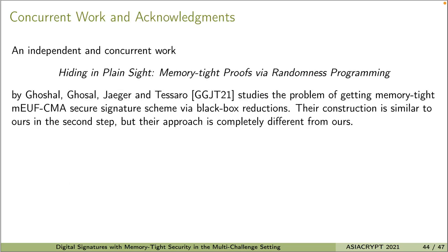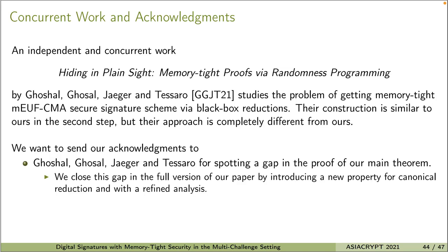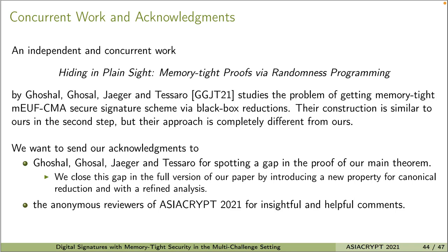I want to bring attention to an independent and concurrent work, "Hiding in Plain Sight: Memory-Tight Proofs via Randomness Programming" by Ghoshal, Jaeger, and Tessaro. They studied the problem of getting memory-tight MUF-CMA secure signature schemes via black-box reductions. Their construction is similar to ours — in the second step, they also use random nonces — but their approach is completely different from ours. We want to send our acknowledgments to the four authors of that paper for spotting a gap in the proof of our main theorem. We closed this gap in the full version of our paper by introducing a new property for canonical reductions and with a refined analysis. We also thank the anonymous reviewers of AsiaCrypt 2021 for their insightful and helpful comments.